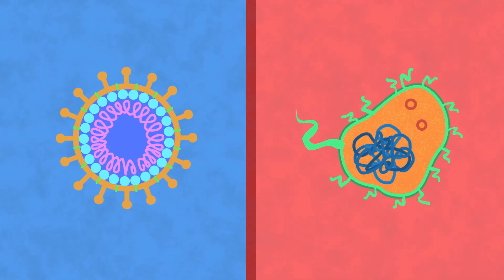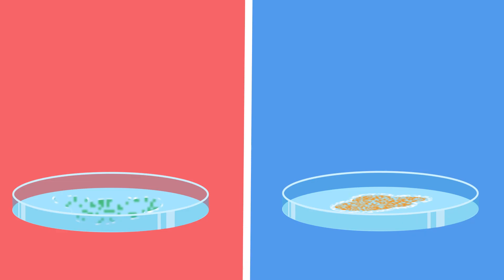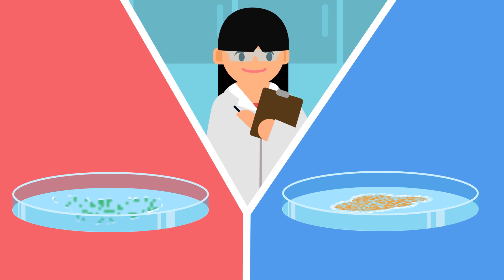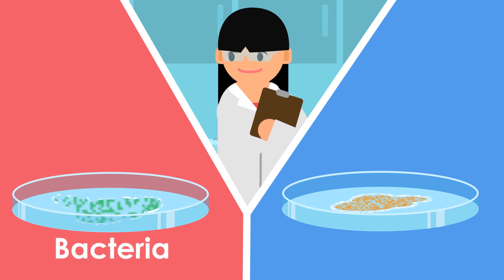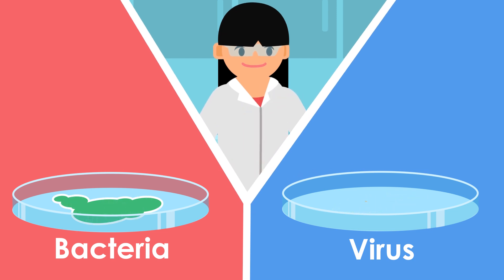So why are bacteria considered to be living, and not viruses? Scientists have mostly agreed that certain behaviours must exist for something to be alive. If a virus and bacteria are taken out of a host body, different things happen. Bacteria can multiply and spread, but a virus, with no host cell to infect, will slowly become inactive.